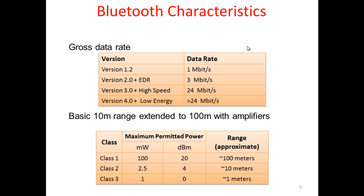The different data rates across Bluetooth versions: Version 1.2 provides 1 megabit per second; Version 2 plus EDR provides 3 megabits per second; Version 3 plus High Speed provides 24 megabits per second; and Version 4 provides greater than 24 megabits per second.